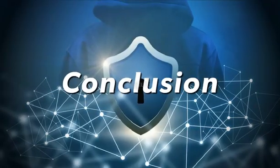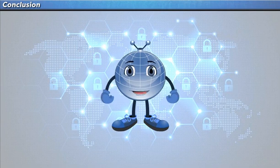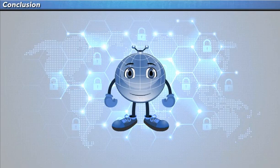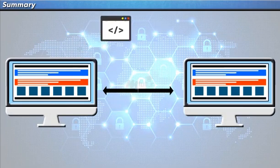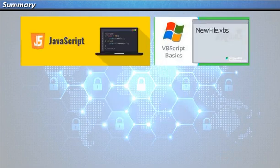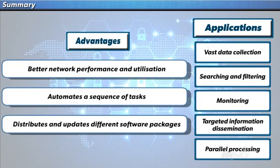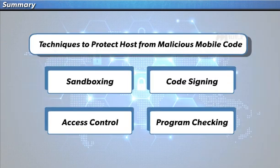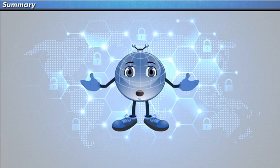That brings us to the end of the lesson. In conclusion, mobile codes have a wide range of applications and advantages, but their vulnerability to security breaches is a growing concern, and mitigations to improve mobile code security are advancing day by day. To summarize: mobile code is software transferred between systems and executed on one or more hosts, and includes scripts like JavaScript, VBScript, Java applets, office macros, and ActiveX controls. Techniques exist both to protect the host from malicious mobile code and to protect mobile code from a malicious host.